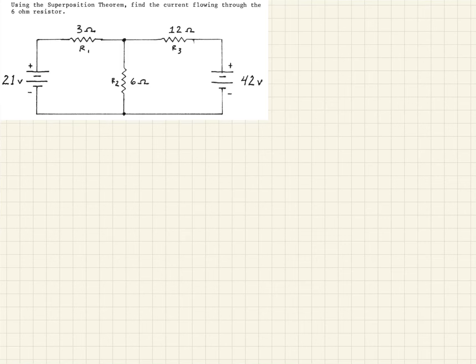Here's another quick example showing how to use superposition. In this one, they're asking us to use the superposition theorem to find the current flow through the six ohm resistor — that's this one here. We'll call it IR2, and that's what we're solving for.